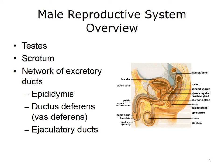Sperm cells are produced in the testes and are moved up into the body through the vas deferens. The vas deferens joins the urethra, which is a tube that opens to the outside of the body through the penis. In addition to producing sperm, the testes also produce male hormones responsible for the development of secondary sex characteristics, such as facial hair, pubic hair, and changes in the voice.